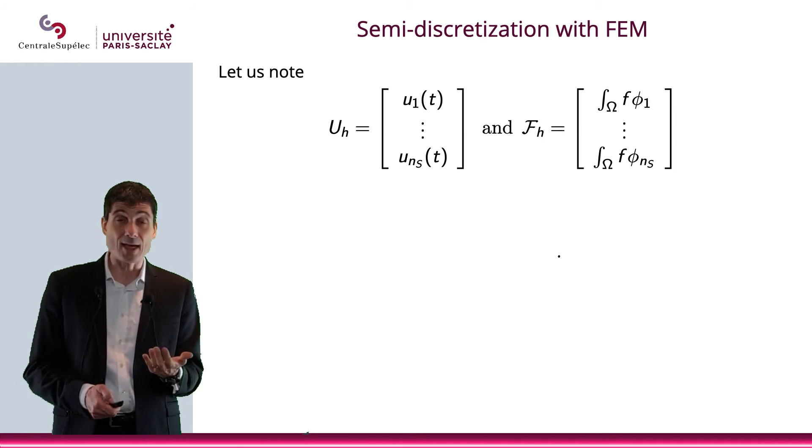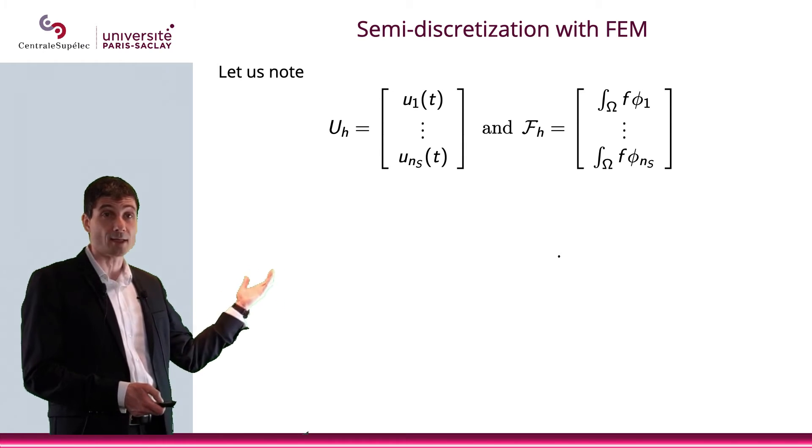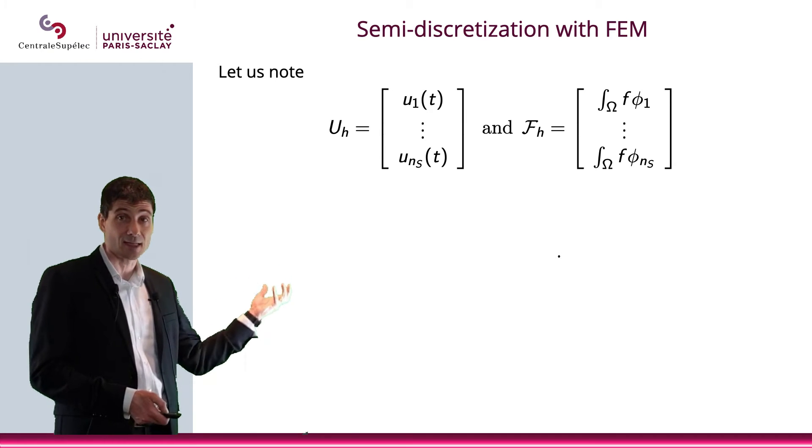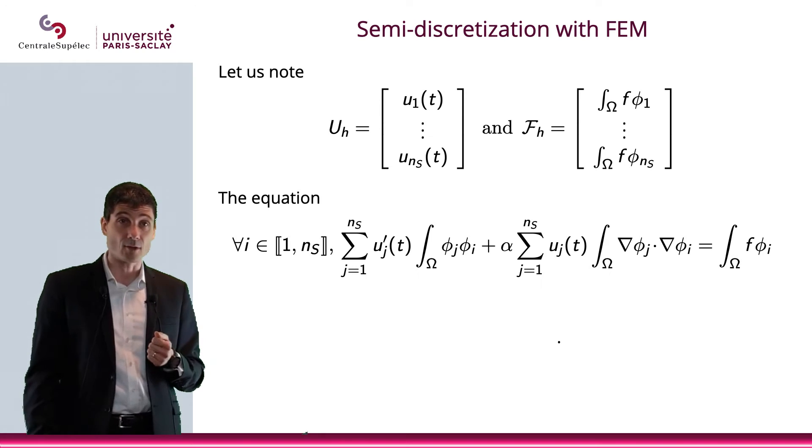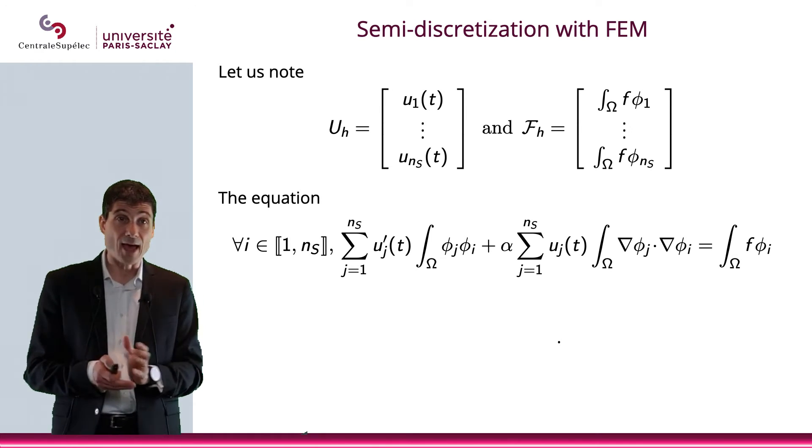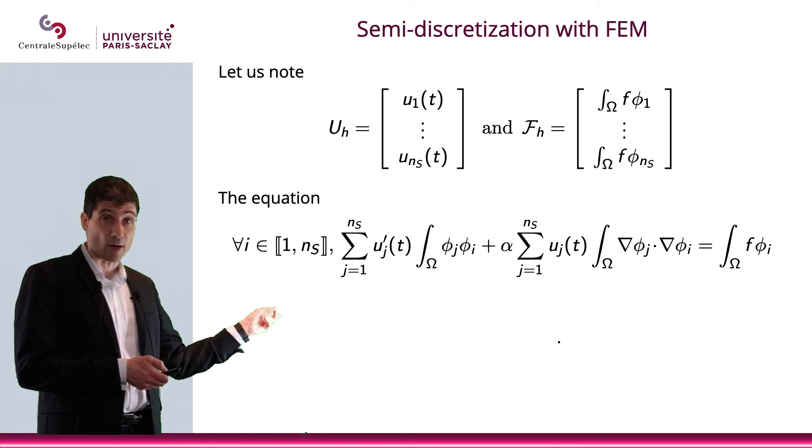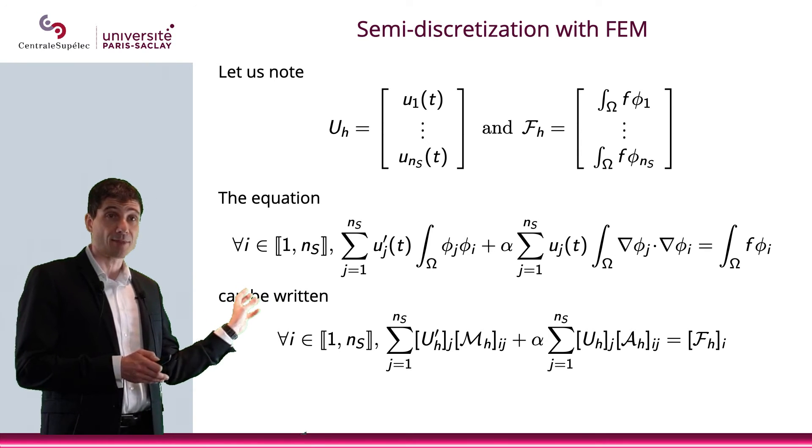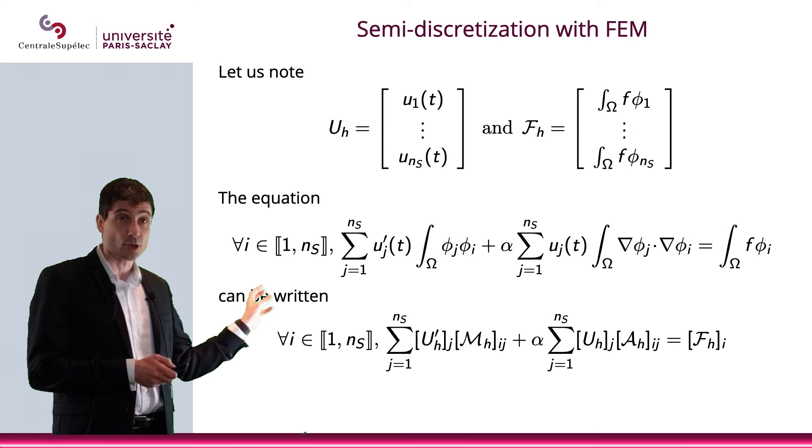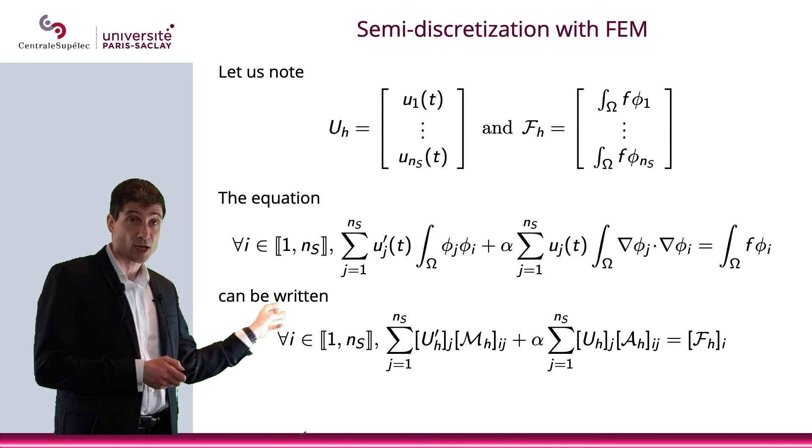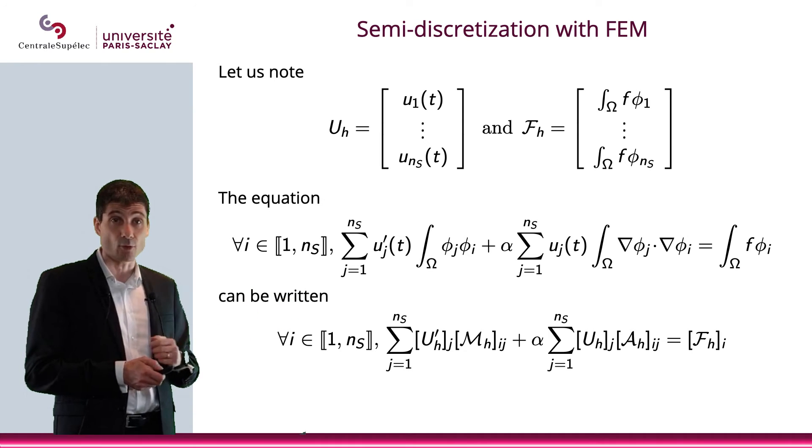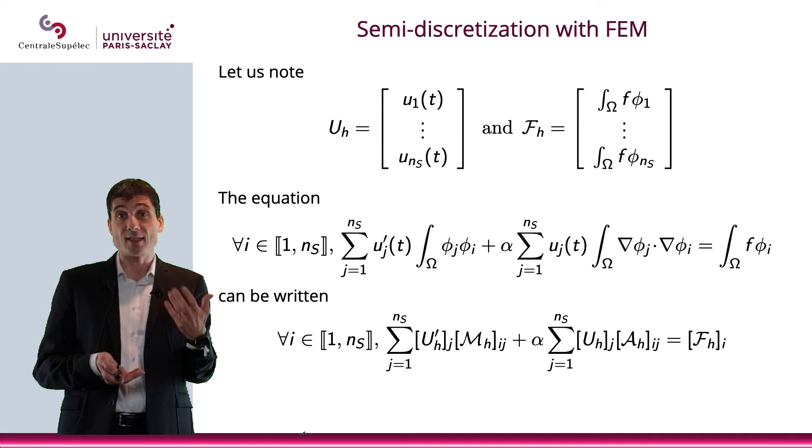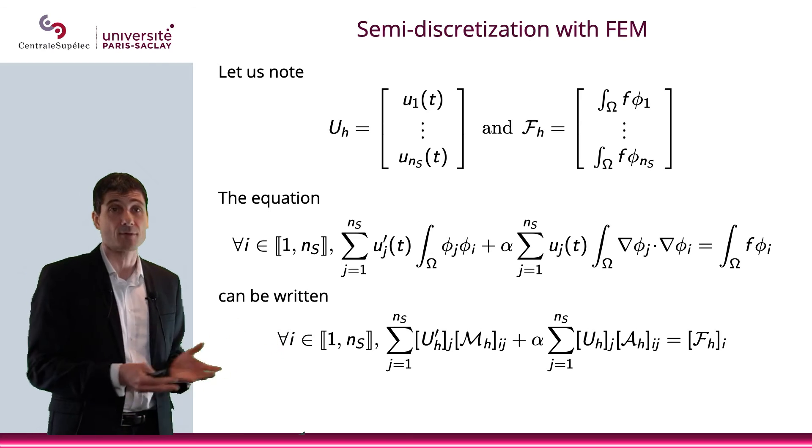But in any case, what I'm saying is now that by writing u_h as u_1 to u_{n_s}(t), obviously u_h is going to be depending on t, and f_h as this integral, which also is going to depend on t, then the equation that we had can be written this way. And so you can see that you can just write that, I mean you can replace u'_j(t) by u'_h, and most importantly, this integral of φ_j φ_i over omega will simply be the ij component of the matrix M. Of course, I define M so I could write this, so there is no surprise here.